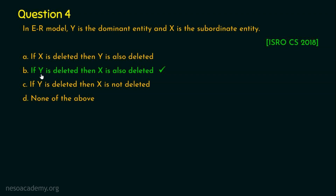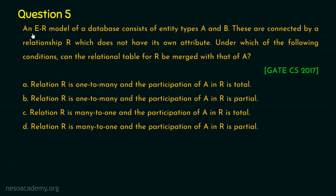The last question: an ER model of a database consists of entity types A and B, connected by a relationship R which does not have its own attribute. Under which condition can the relational table for R be merged with that of A? Asked in GATE Computer Science 2017. Option A: R is one-to-many and participation of A in R is total. Option B: R is one-to-many and participation of A is partial. Option C: R is many-to-one and participation of A is total. Option D: R is many-to-one and participation of A is partial. Your 20 seconds starts now.